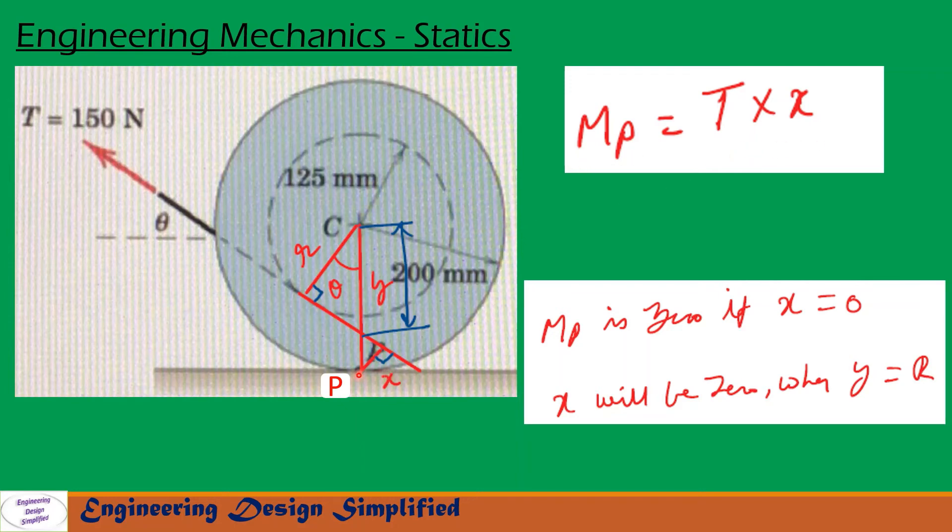So mp will be zero when x equal to zero. x will be zero when this distance from here to here, that is, let us call that y, y should be equal to capital R, that is 200 millimeter.